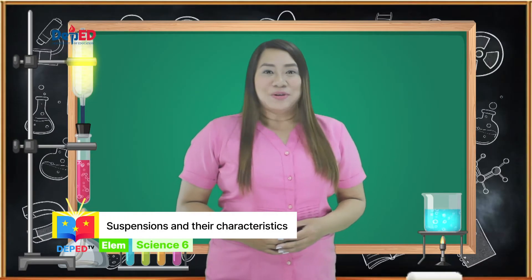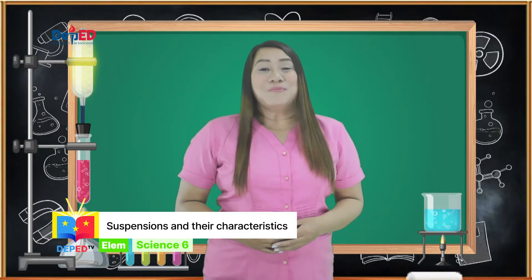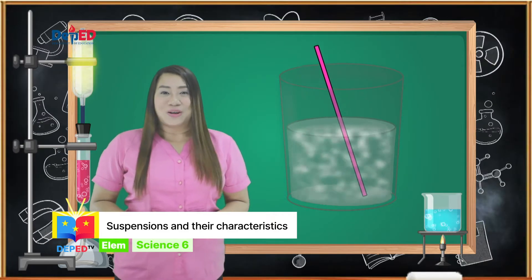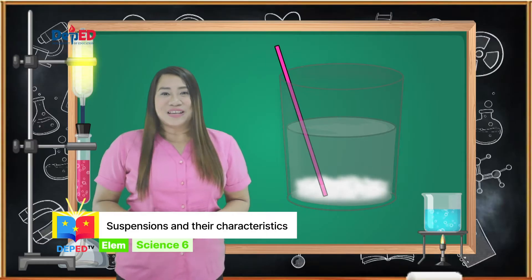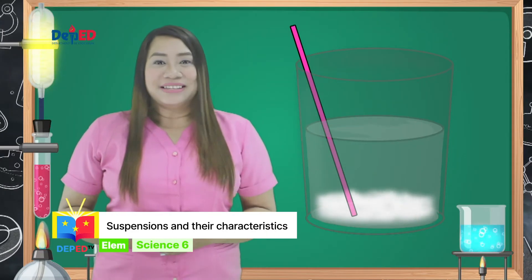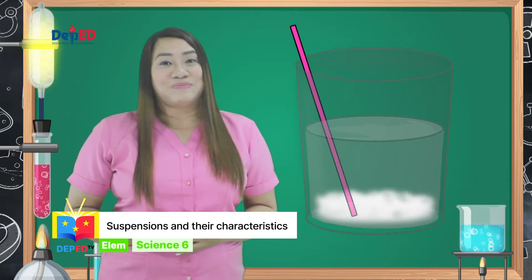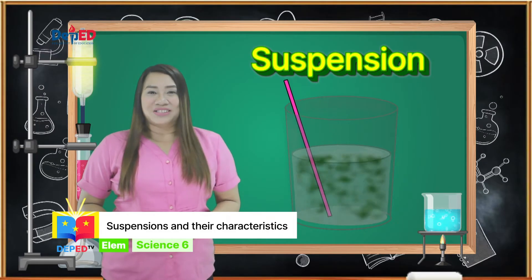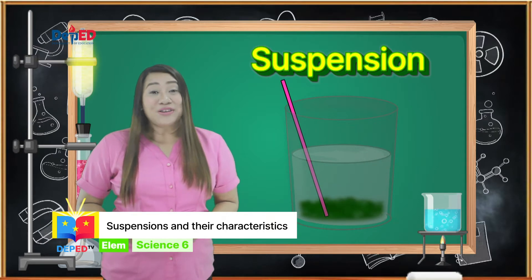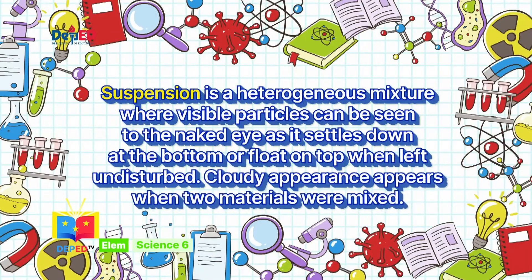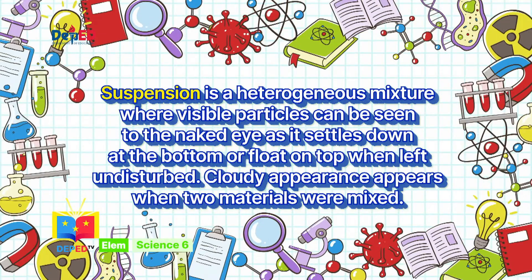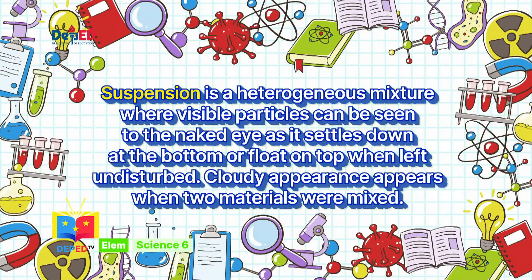Particles in the surrounding environment that suspend in air and water affect the characteristics of some substances when combined with it. When you put some flour in a glass of water and stir it, the flour will not dissolve entirely in water. But it will settle down when left undisturbed. Visible particles of flour can be seen to the naked eye as it makes the water cloudy. Mixtures of tea leaves in hot water is an example of suspension — the tea leaves settle down at the bottom where you can see the two mixtures combined. Suspension is a heterogeneous mixture where visible particles can be seen to the naked eye as it settles down at the bottom or floats on top when left undisturbed.